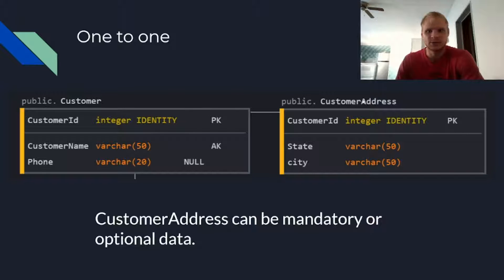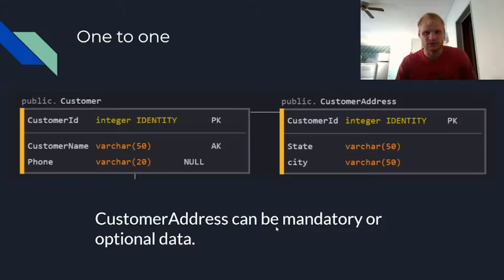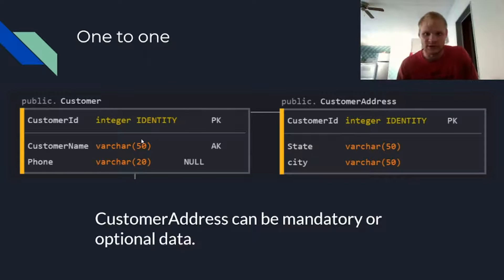So we have the customer table and we have the customer address table. This is a one-to-one relationship where each one has a customer ID, and the customer address can be mandatory or optional data. Usually we don't see one-to-one relationships too often — they're mostly just for convenience if we want to split up our data into different sections.